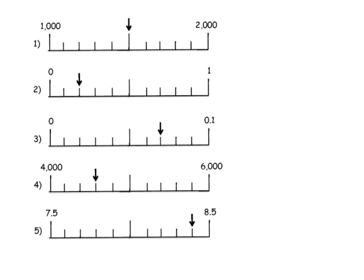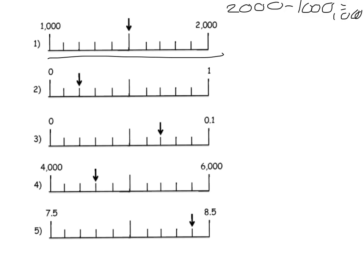To be able to read and interpret scales, I always need to know how much each jump is worth. So the easiest way to do that is to find out what the whole group is worth — the difference between 1000 and 2000. So I would do 2000 take away 1000, which equals 1000. So I know this whole line is worth 1000.